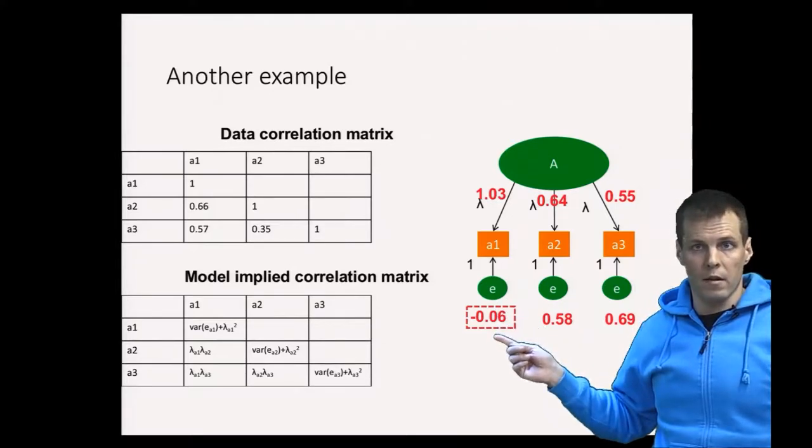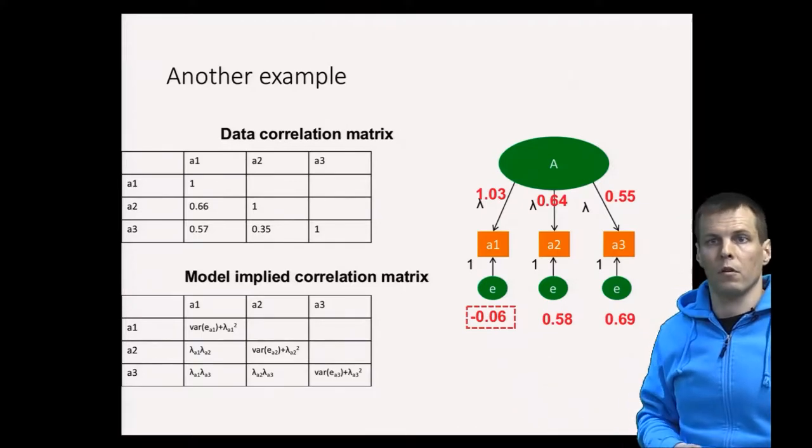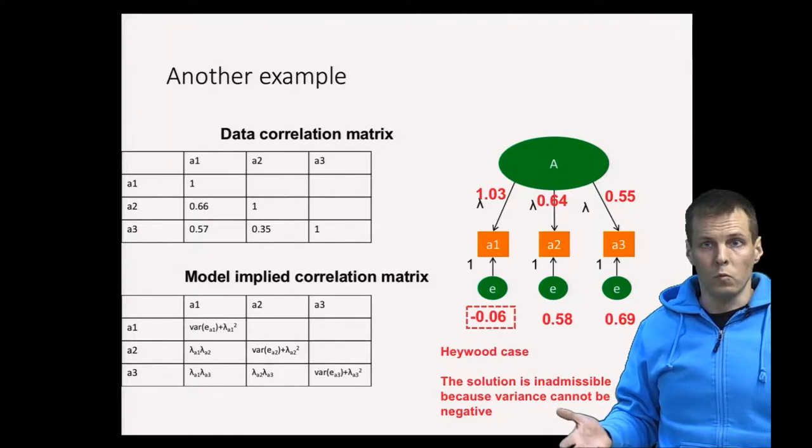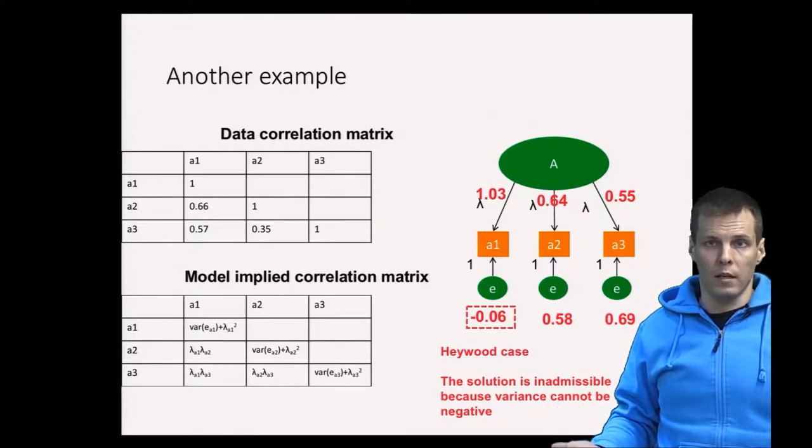So it's a negative error variance, variances can't be negative. It is inadmissible because it's an impossible solution. Now what do we do with it and why does it occur?